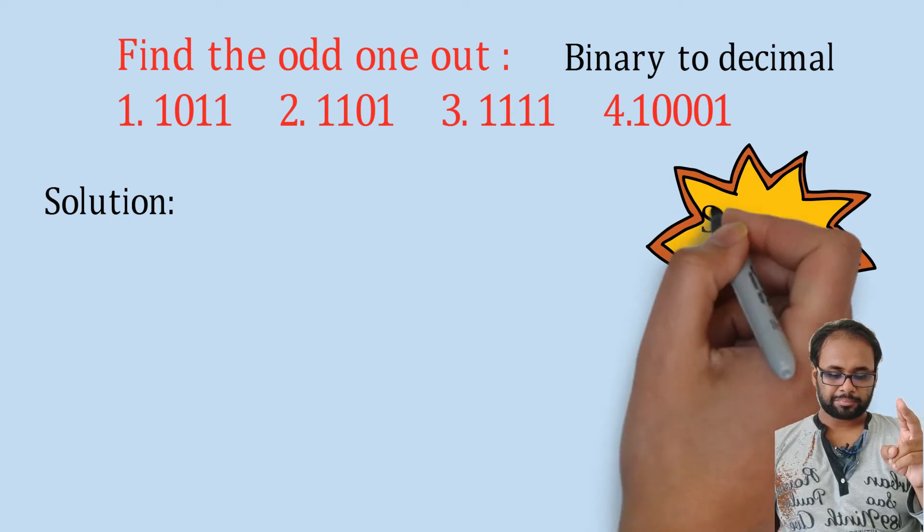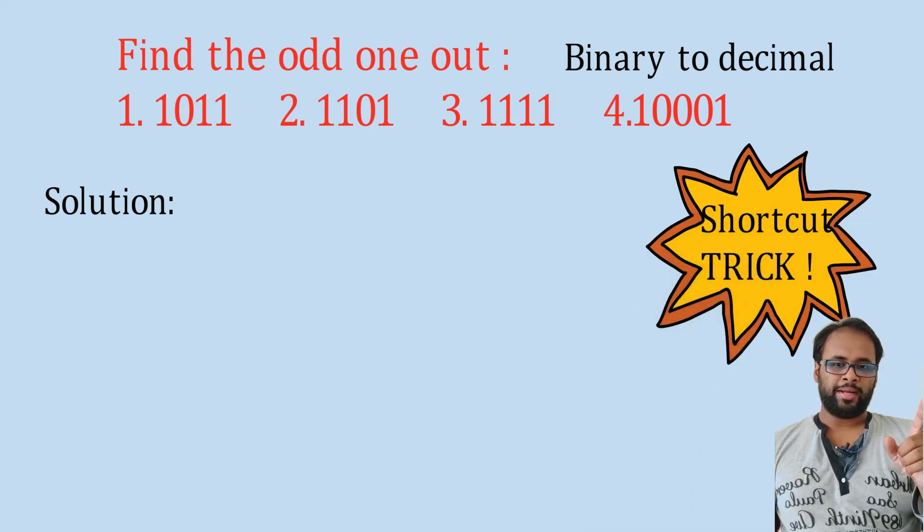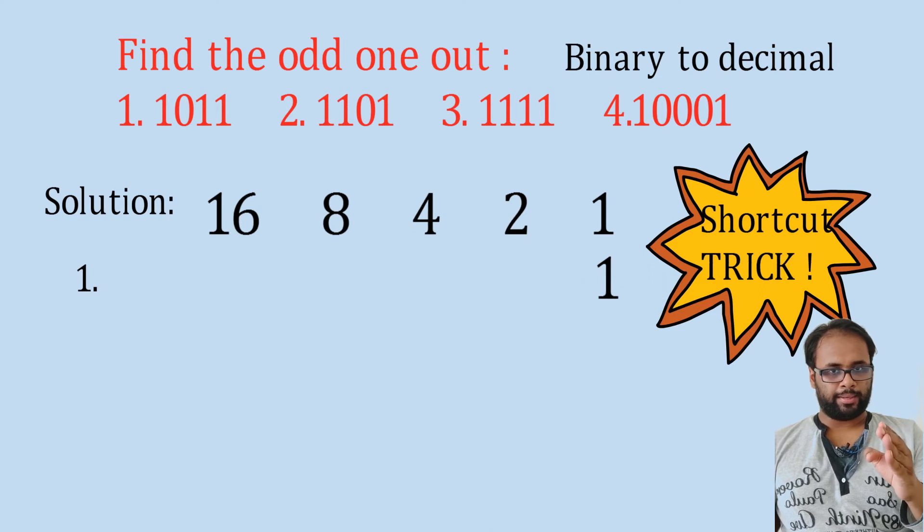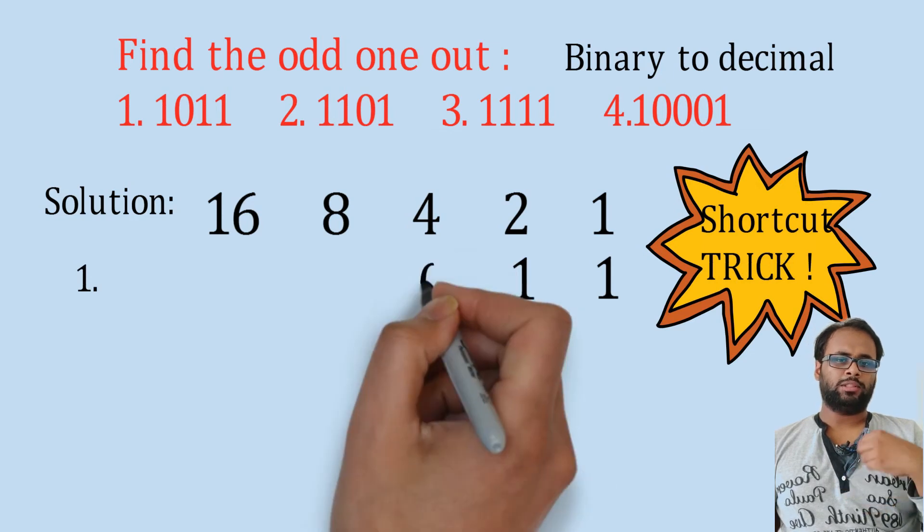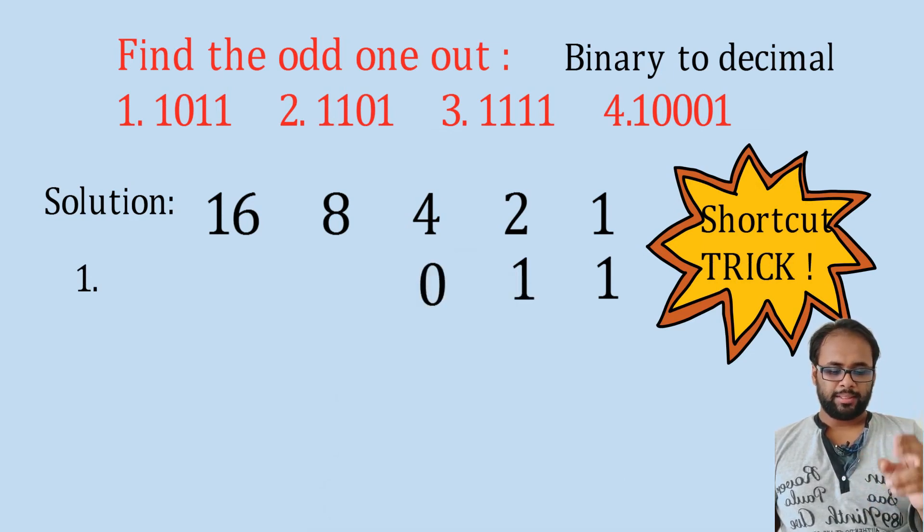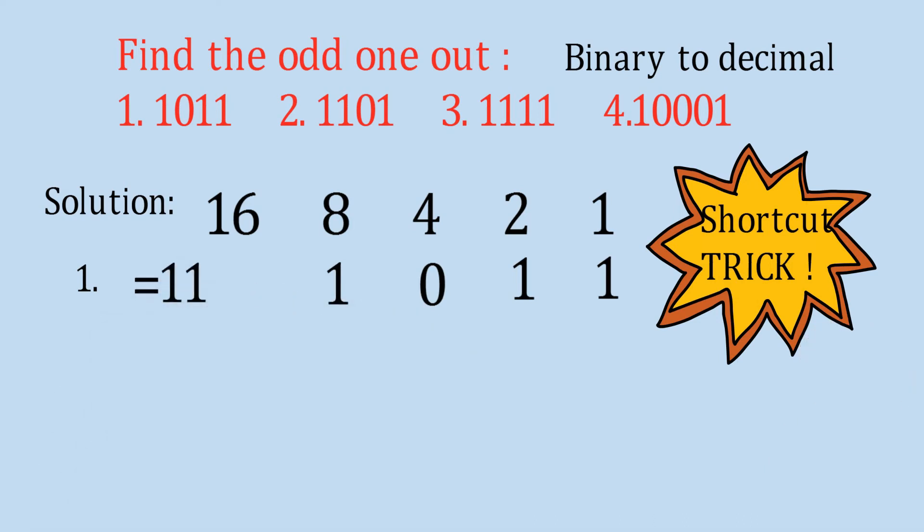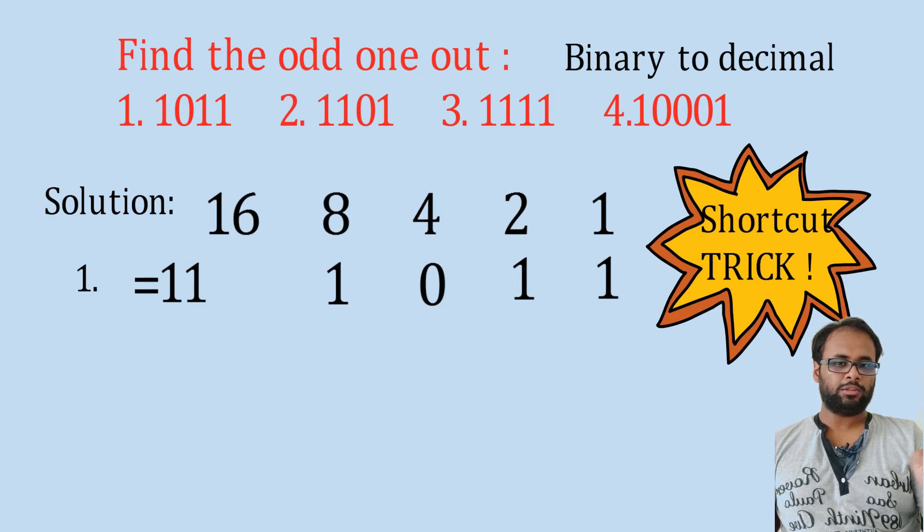Let's see the shortcut trick. You just write down 1, 2, 4, 8, 16 like that. Then we have the number, suppose 1011. You write it down from right to left. Whenever there is a 1, whatever is there at the top you just add those things. Now 1011: 1 comes below 8, another 1 comes below 2, then another 1 comes below 1. So you just add those: 8 plus 2 plus 1 equals 11. That's the shortcut.